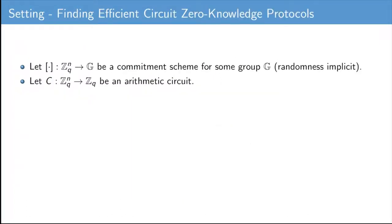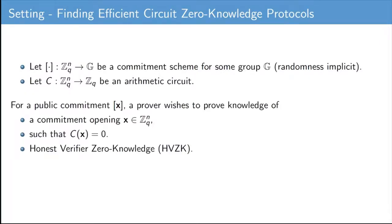Let us consider the following circuit zero-knowledge setting. In this setting, we let these square brackets denote some vector commitment scheme. This commitment scheme allows a prover to commit to n-dimensional Z_Q vectors in a single group element G, and we leave the commitment randomness implicit. Moreover, we let C be some arithmetic circuit. We will restrict ourselves to arithmetic circuits with output dimension 1, but all the results easily generalize to arbitrary output dimensions. We aim to find protocols that allow a prover to prove knowledge of some commitment opening X corresponding to some public commitment such that C of X equals zero. Moreover, we aim to find a protocol that is honest verifier zero knowledge.